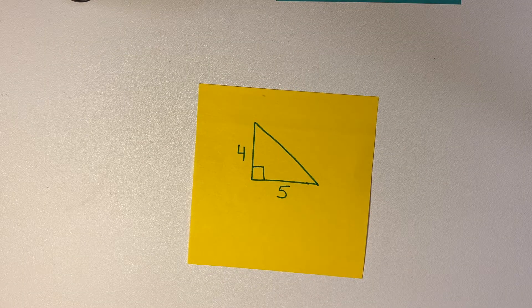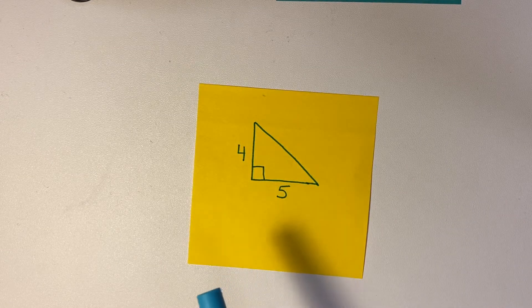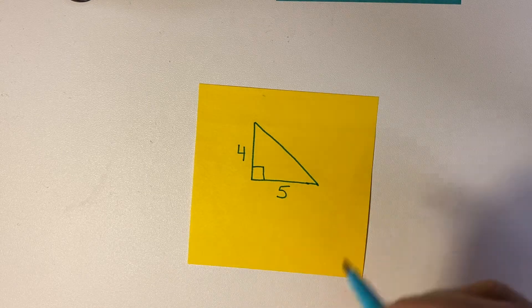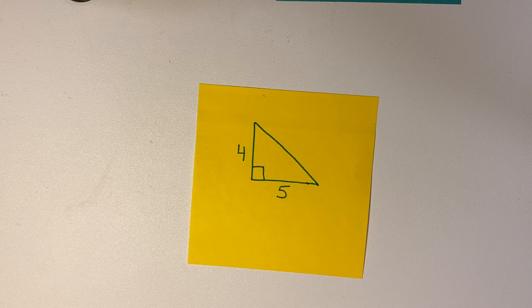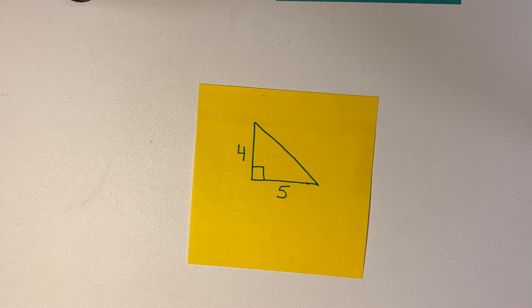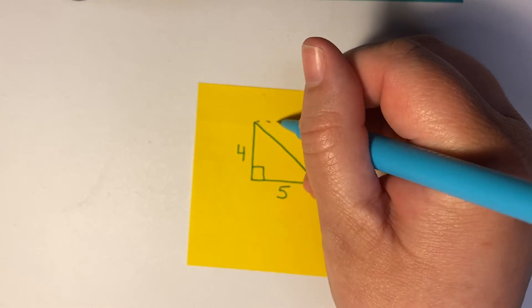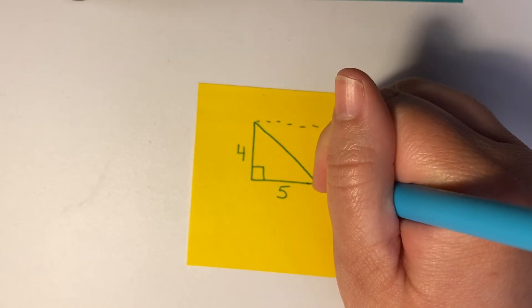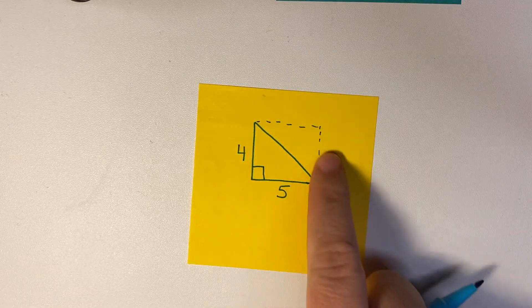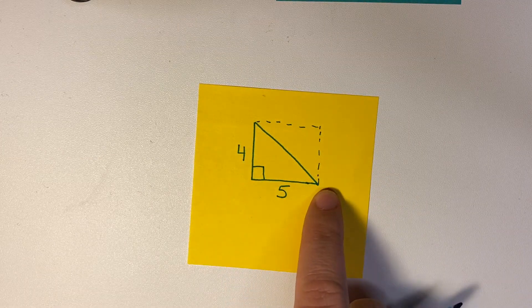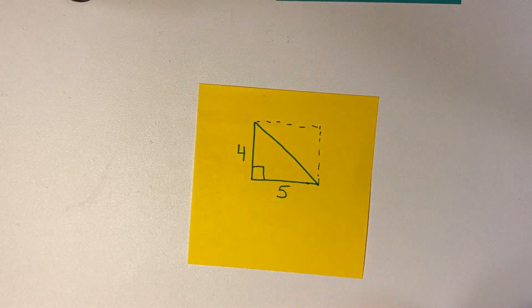And what we're going to find today is how do we find the area of this. Now on the square and the rectangle we could draw those lines and then we could actually count the squares and see how many squares there were. Now you actually can kind of do that here because we could complete this rectangle. So this isn't actually part of the triangle, but we could see that this rectangle would have 4 times 5 which would be 20, and if we drew all the lines we could count the 20 squares.